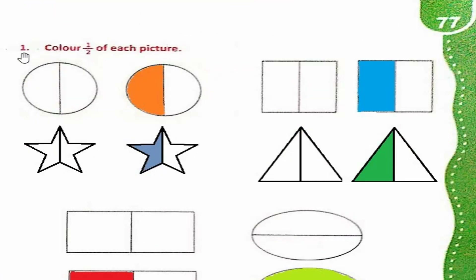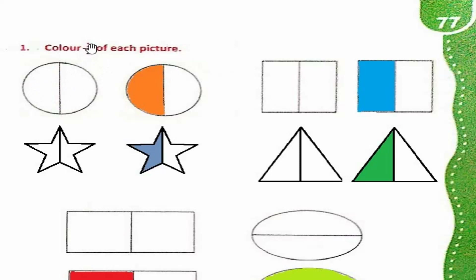Page 77. Question number one: Color one by two of each picture. Ab one by two ka kya matlab hai? Ke total parts two hain — one, two — aur hamein ek part shade karna hai. So total parts two hain aur hamein ek part shade karna hai. So hum is part ko shade kar lenge. So one by two is shaded — total parts two and one is shaded.